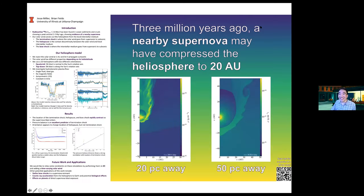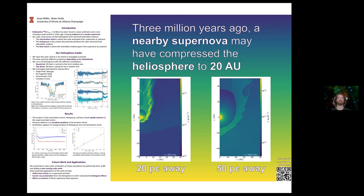Jesse, tell us a little bit about your poster — the very large graphic. So we know a supernova exploded within about 100 parsecs of our solar system 3 million years ago, and we'd like to see what kind of effect that has on the solar wind. For a relatively nearby supernova like this, it could compress the solar winds down to 20 AU, which means everything outside of that is directly exposed to the blast of the supernova. Very exciting, maybe a little too close for comfort. Let's give everybody a round of applause for excellent work, especially under such difficult conditions. Congratulations.